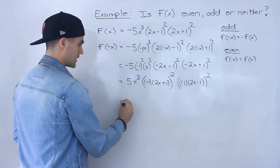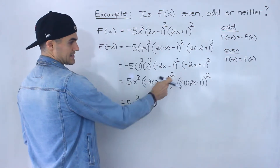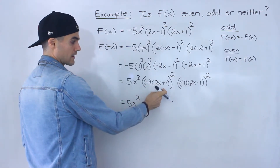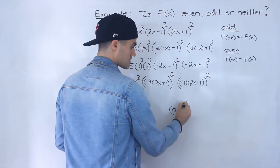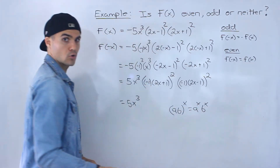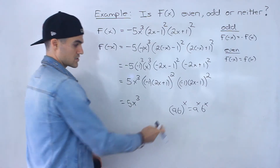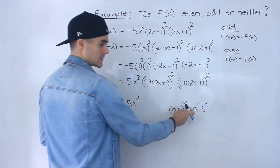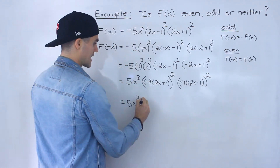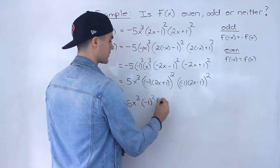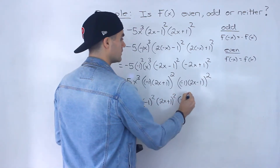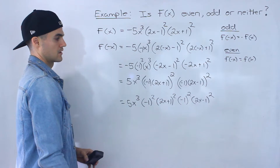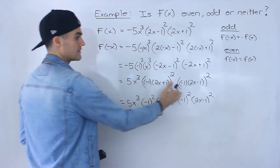Now we can take these exponents and apply them to each factor inside the bracket, because we're multiplying two things. If you remember, when multiplying two things, each factor in that bracket can go to that exponent — whether it's a single number like the negative 1 or an expression like 2x plus 1, it goes to that exponent. So we rewrite this as negative 1 to the power of 2 times 2x plus 1 to the power of 2, and negative 1 to the power of 2 times 2x minus 1 to the power of 2.